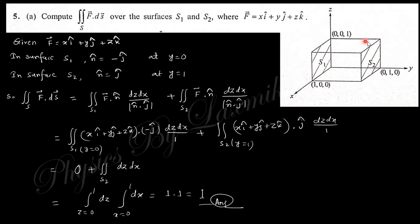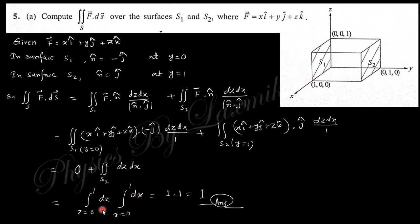The integration on these two surfaces S1 and S2 can be written accordingly. This lies in the yz-zx plane because it is perpendicular to the y-axis. For S1, n-cap is minus j-cap and y equals zero, so we get zero because j·j is one and y is zero. For S2, y equals one, so integrating x from 0 to 1 and z from 0 to 1, the final value of this integration is 1.